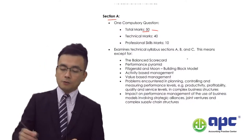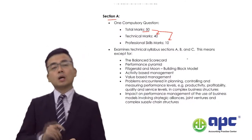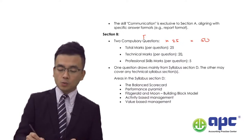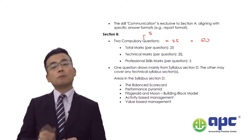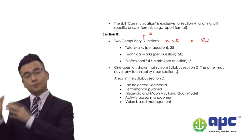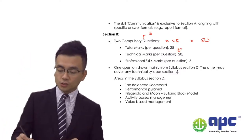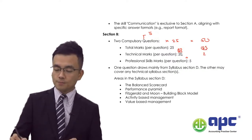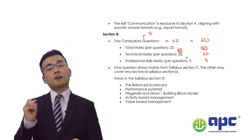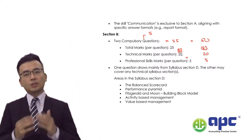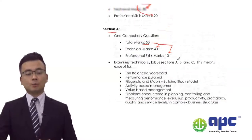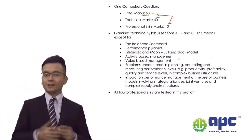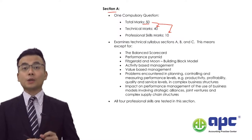Within Section A, 50 marks will be divided into 40 technical and 10 professional marks. In Section B, each question will have five professional marks — so question 2 will be 20 technical marks and five professional marks, and question 3 will also be 20 technical marks and five professional marks. All these questions are compulsory — you have to do them all. You can't miss any requirements, otherwise you will very likely fail.